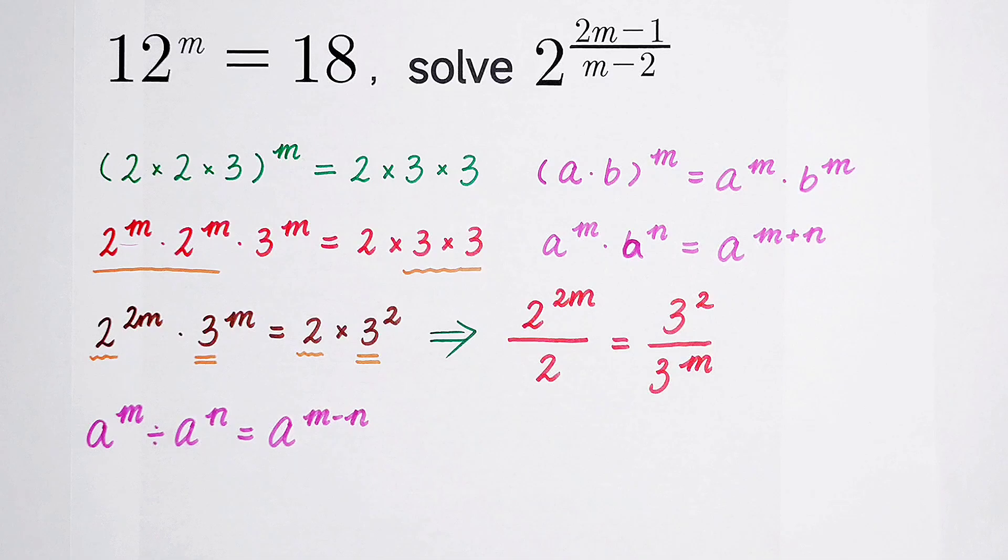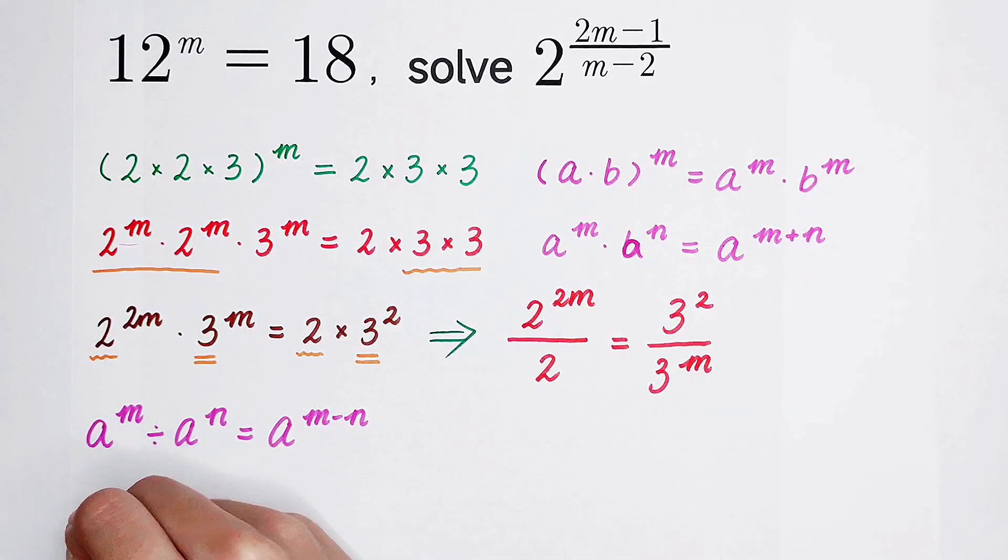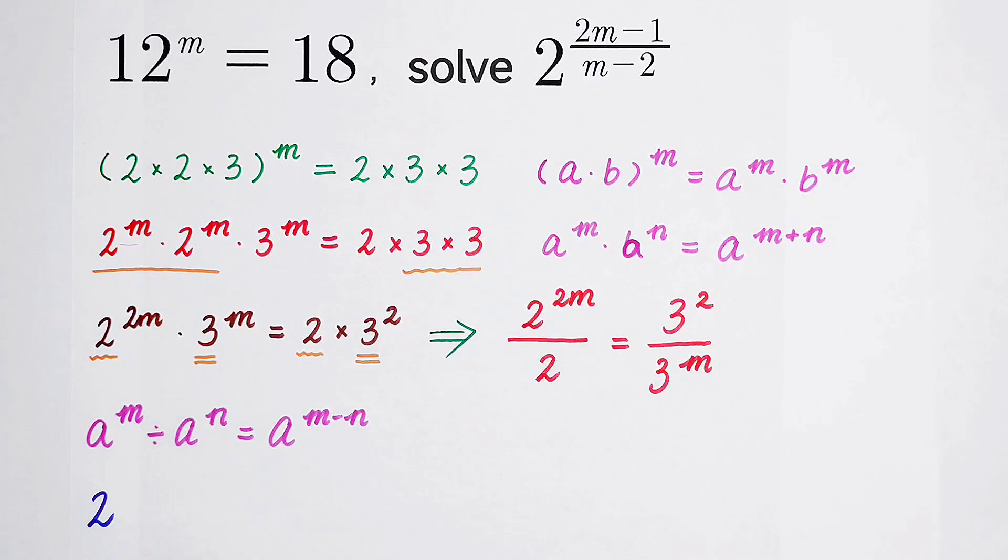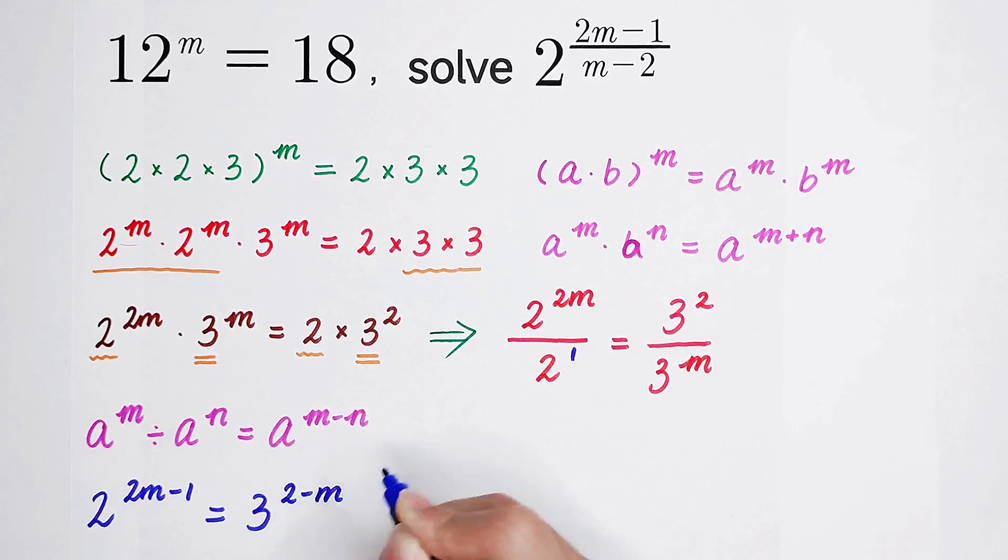Wonderful. Now, what's on the left-hand side? It is 2 to the power. This, I can regard it as 1. So it is 2m, then minus 1. So the exponent is this. And what's on the right-hand side? It is 3 to the power 2 minus m.